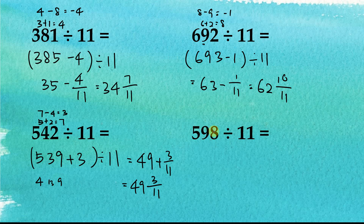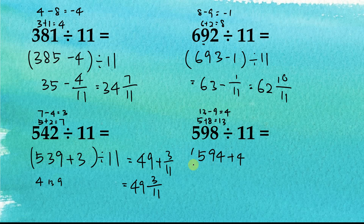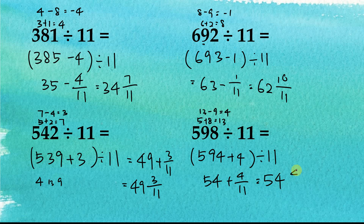The last example: 5 plus 8 equals 13. And 13 minus 9 equals 4. To make this divisible by 11, we change it to 594, then add 4, giving us (594 plus 4) divided by 11. And 594 divided by 11 equals 54. Then plus 4 over 11, so the answer is 54 and 4 over 11.